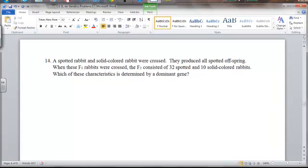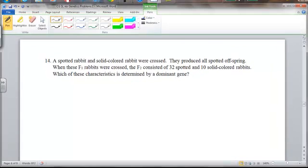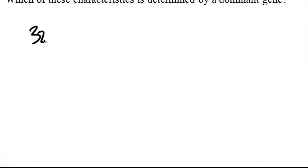Alright, so a couple things here. You need to realize that this number 32 and this number 10 is pretty close to a 3 to 1 ratio. 32 to 10 is almost like 3 to 1. Now, with genetics actual scenarios, we don't always get expected outcomes. But the more outcomes you test, the closer the actual outcomes are going to be to what we expect them to be. In this case, it's not exactly 3 to 1, but it's pretty close.